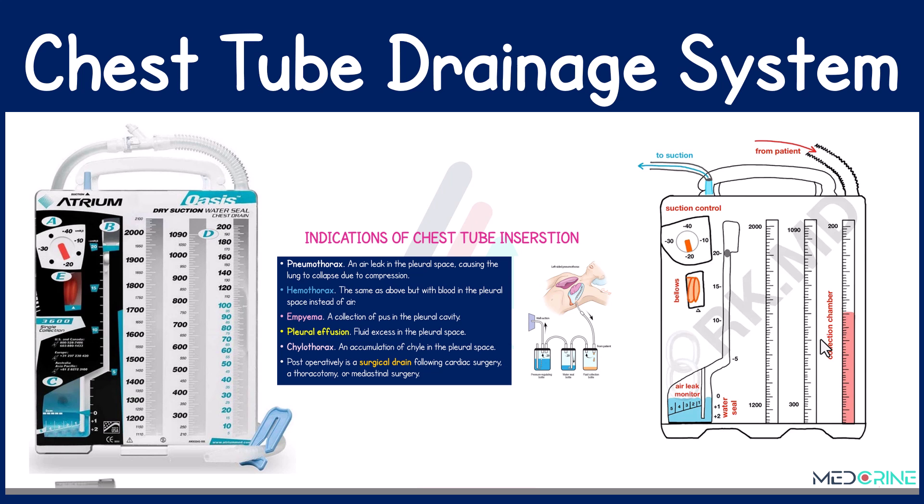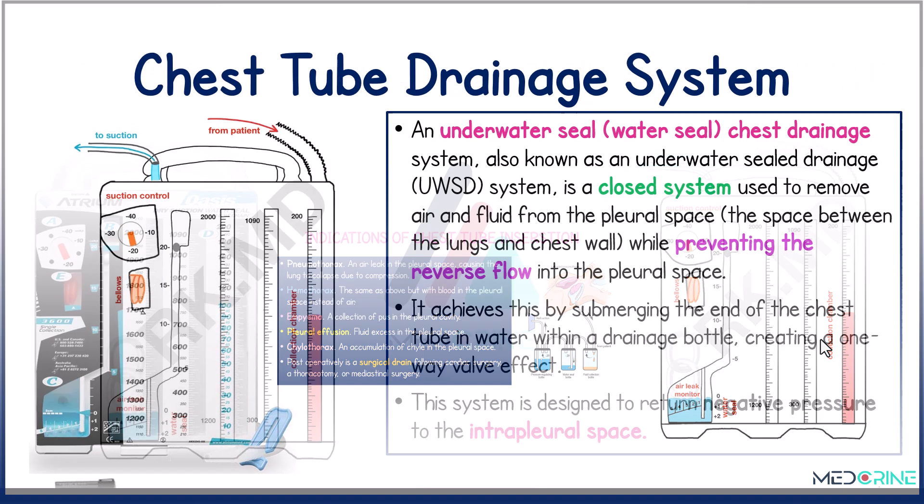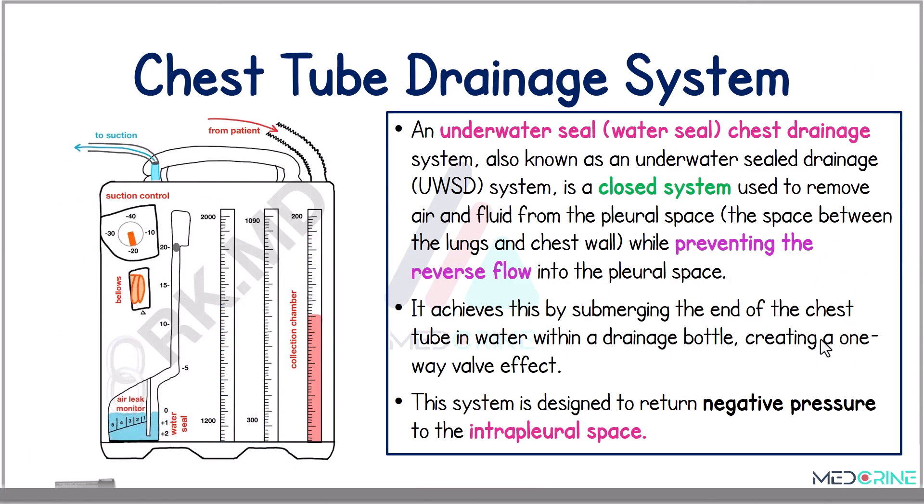Welcome to today's tutorial. Today we're going to look at chest tube drainage systems. A chest tube drainage system, or an underwater seal drainage system, is a closed system which is used to remove air and fluid from the pleural space.